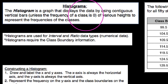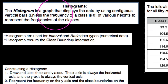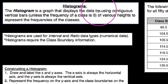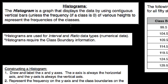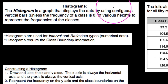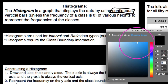A histogram is a graph that displays data by using contiguous vertical bars — unless the frequency of the class is zero — and uses various heights to represent the frequencies of the classes. What I want to mention right off the bat is that contiguous bars means bars that are back to back, that abut one another, or there are no gaps between them.